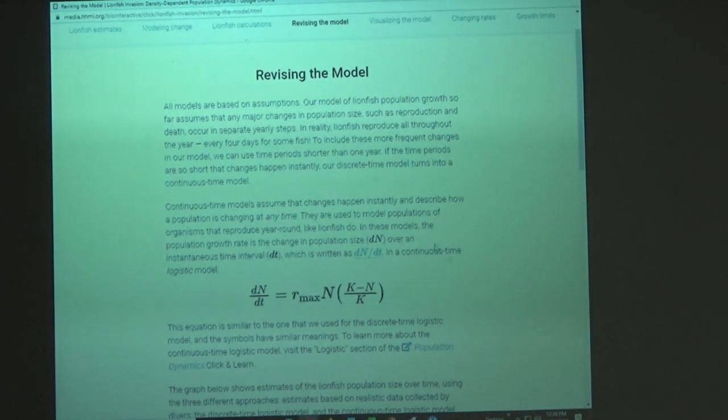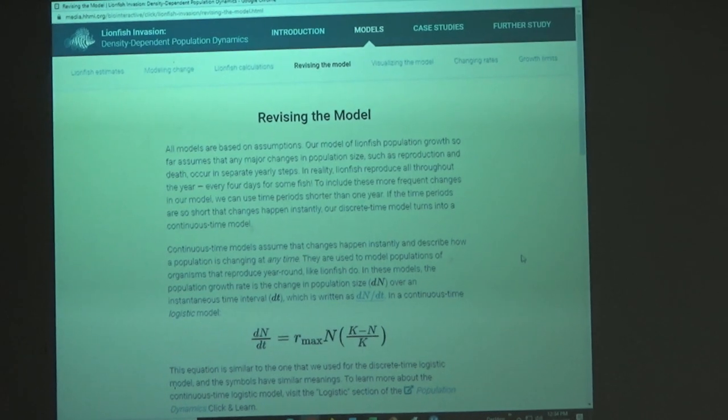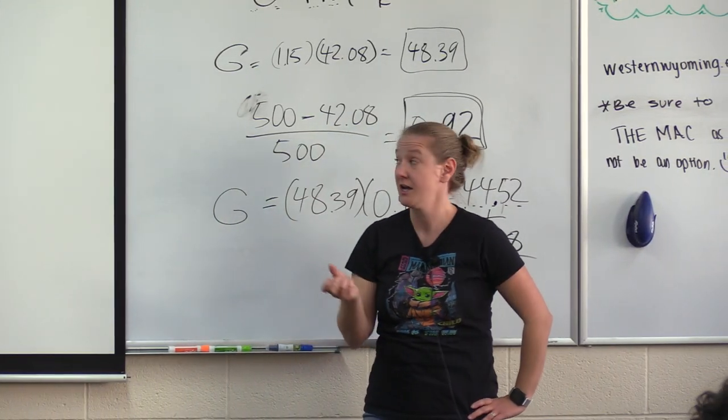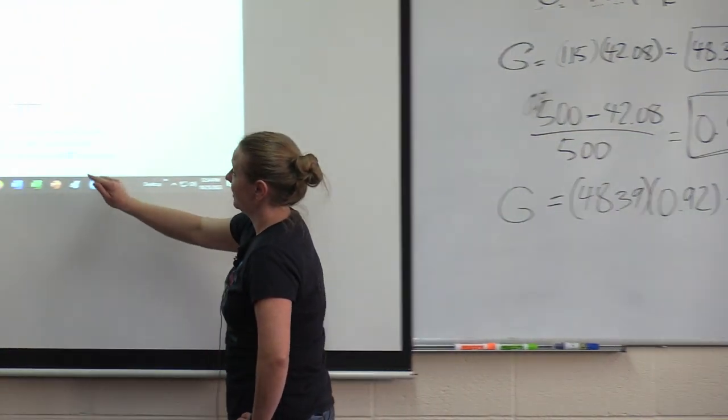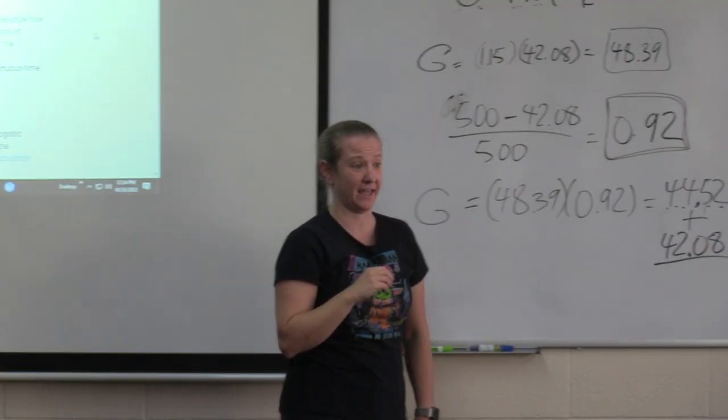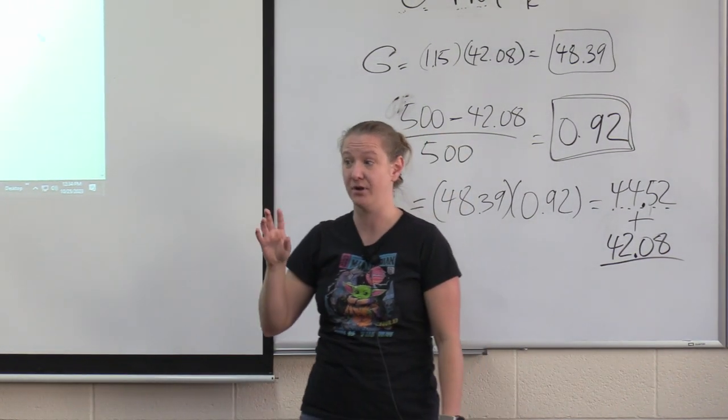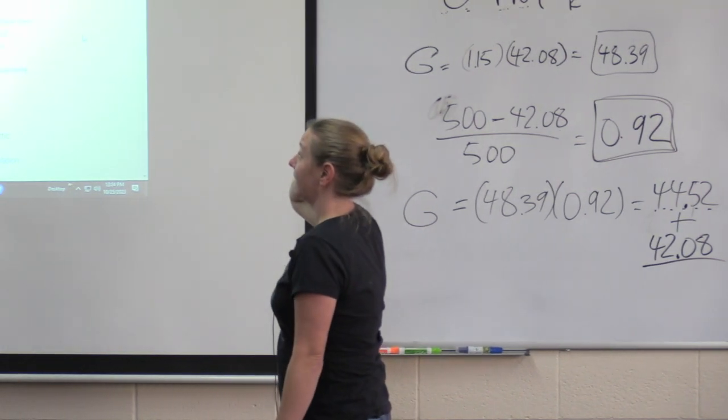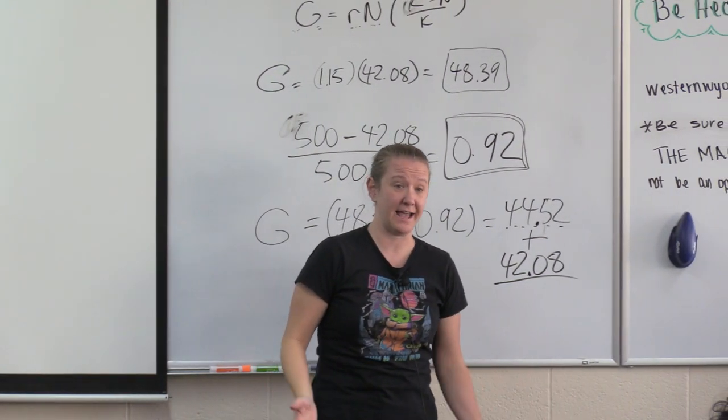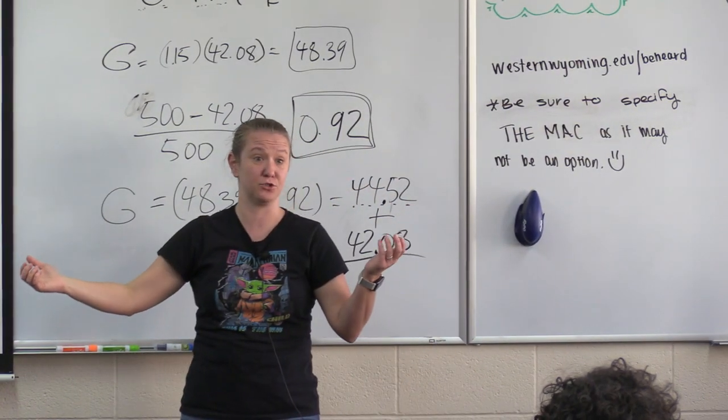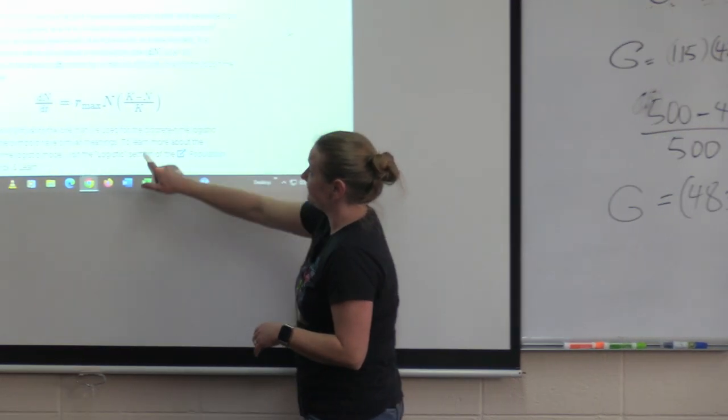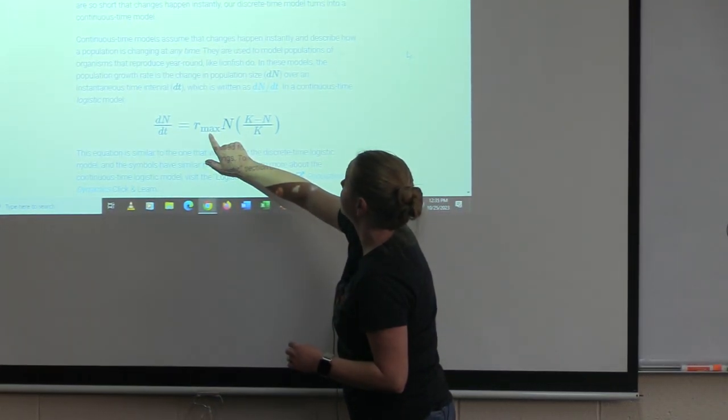So next it talks about revising the model because we use different types of models for different organisms that have different reproductive strategies. So the discrete time model which was the one before with the time t and time t are usually used for things that have a mating season or changes, fluctuation over time for when they are actually reproducing. These lionfish, like humans, reproduce all throughout the year. So there's really no point in having a point in time. It's just going to be per whatever unit time you choose to calculate. So we use a continuous time logistic model, which means this r max is going to stay the same at any given time.